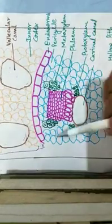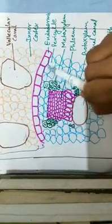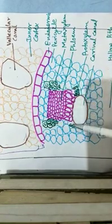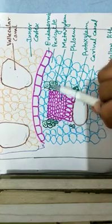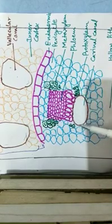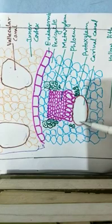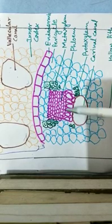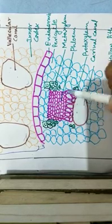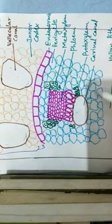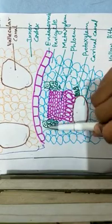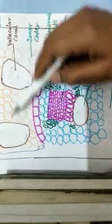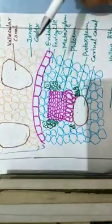Looking at the diagram of the stelar region: there is single-layer endodermis followed by pericycle. The green color shows the xylem — protoxylem and metaxylem groups — and inside is the carinal canal. As mentioned, the phloem is in radial alignment with the carinal canal, shown in purple color. This represents one vascular bundle alternating with the vallecular canal. So there are two types of canals: vallecular canal and carinal canal.